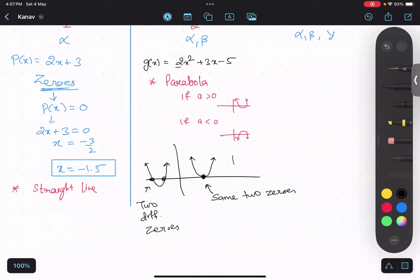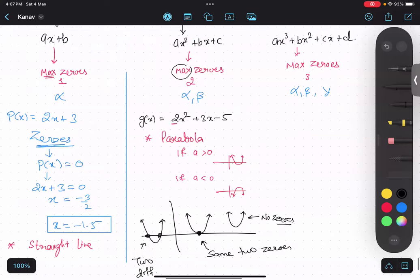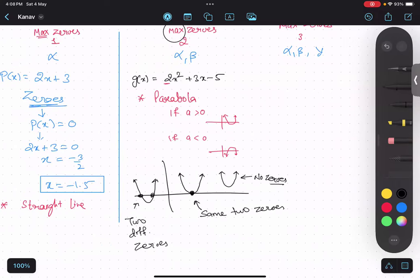Now third case could be it is not even touching x-axis. So no zeros. That's why we said maximum two zeros. We never said two zeros. It can have no zeros, that means no value of x. It can have only one zero, that means both the zeros are same. And third one is two different zeros.